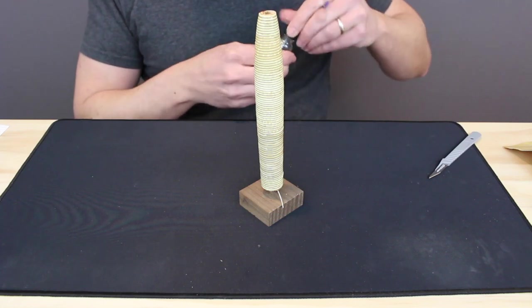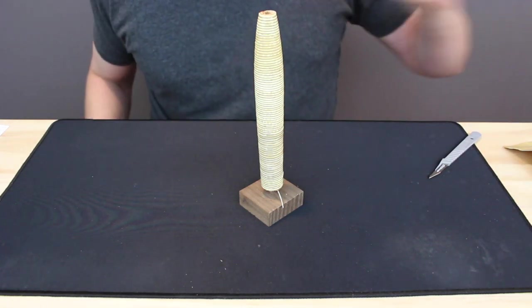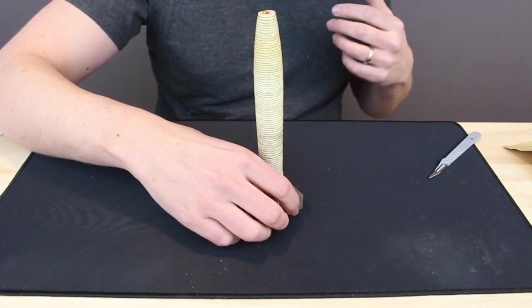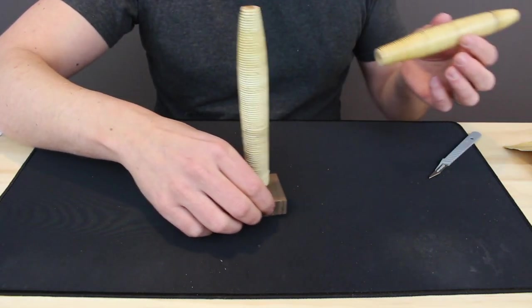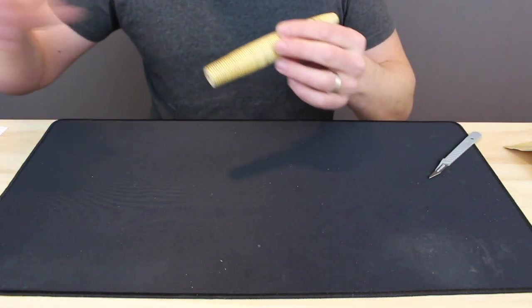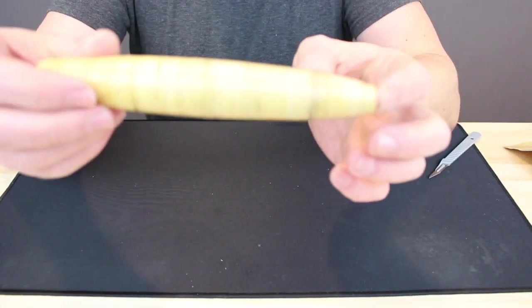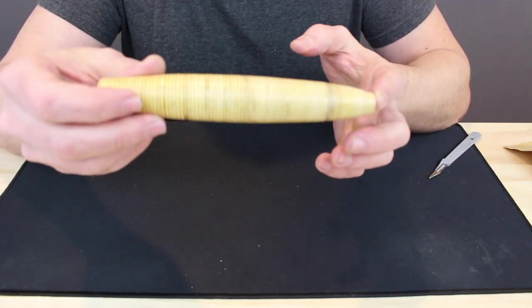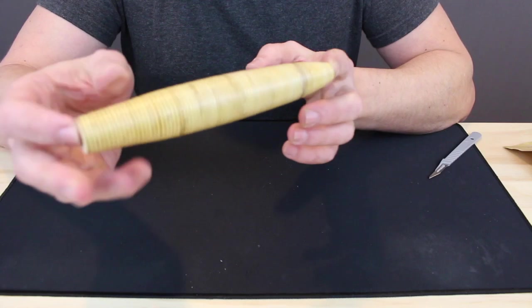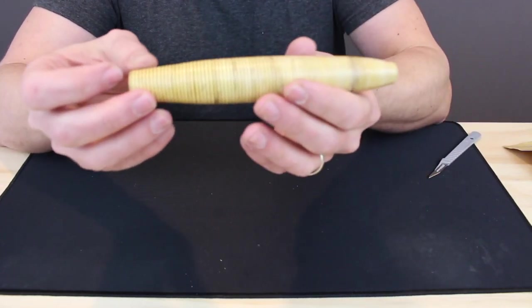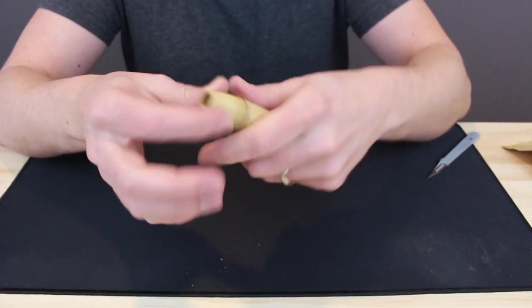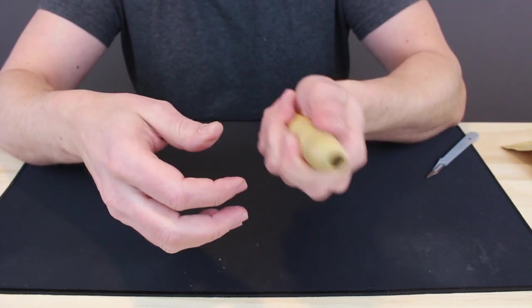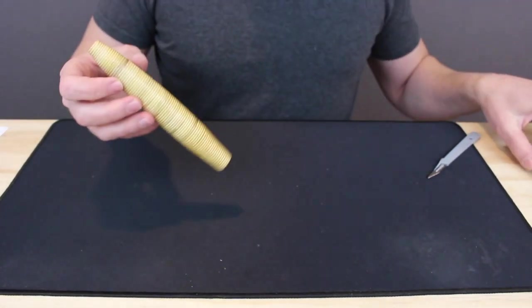I'm going to jump to one that I did the other day that's dry. You can see it's taken on a nice amber tone and has a real finished, polished look to it. But the varnish isn't so heavy that I can't feel the rattan in my hand.